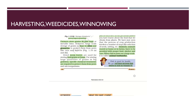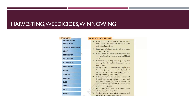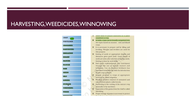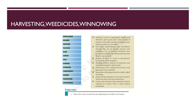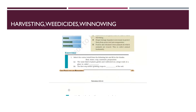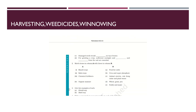We have completed the first lesson, crop production and management, in three different classes. Please go through all the lessons. Key words we have learned include: animal husbandry, crop, fertilizer, granaries, harvesting, irrigation, kharif crop, manure, plow, rabi, seeds, silo, sowing, storage, threshing, weeds, weedicides, and winnowing. Please go through each topic. If you have any doubts or queries, write in the comment box.